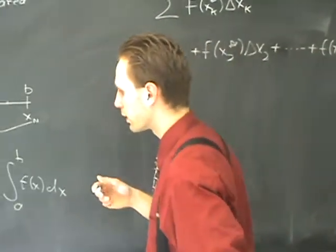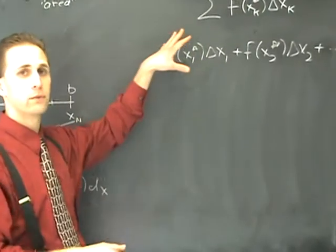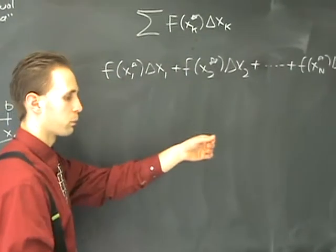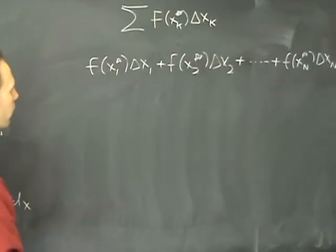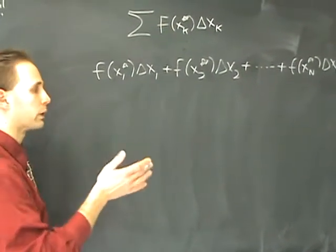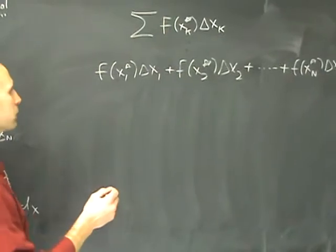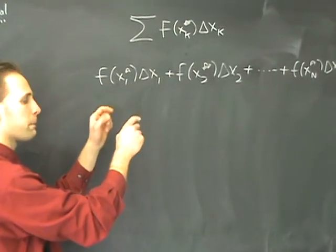And we said that how we choose our xk stars is going to affect how this finite sum turns out. If we do a left endpoint, it's going to be different than had we chosen a right endpoint. But in the end, when we take the limit, it doesn't matter how we choose them. And that's what we're going to capitalize on. What we're going to do is choose the x stars in a specific way.